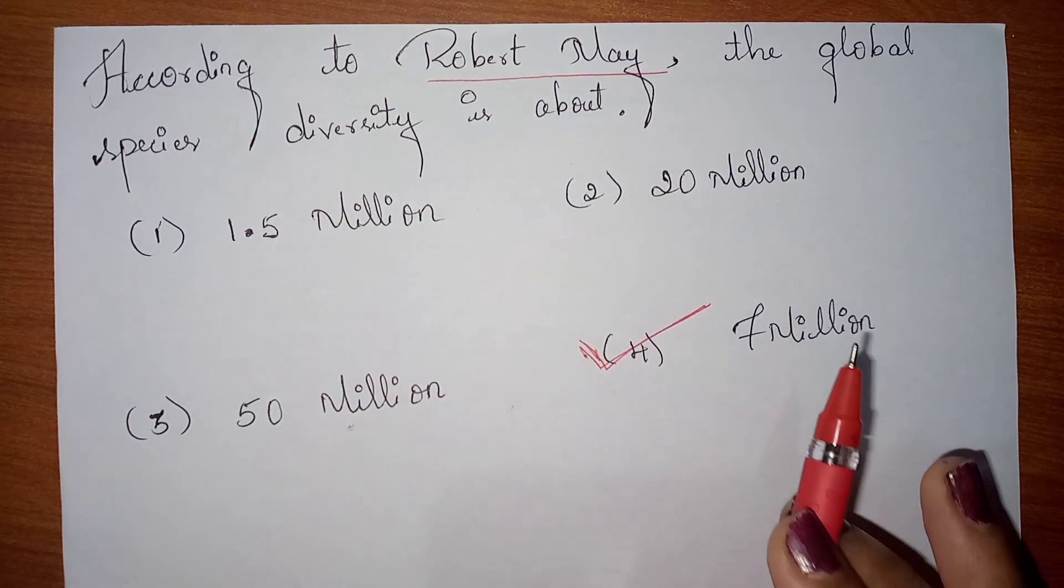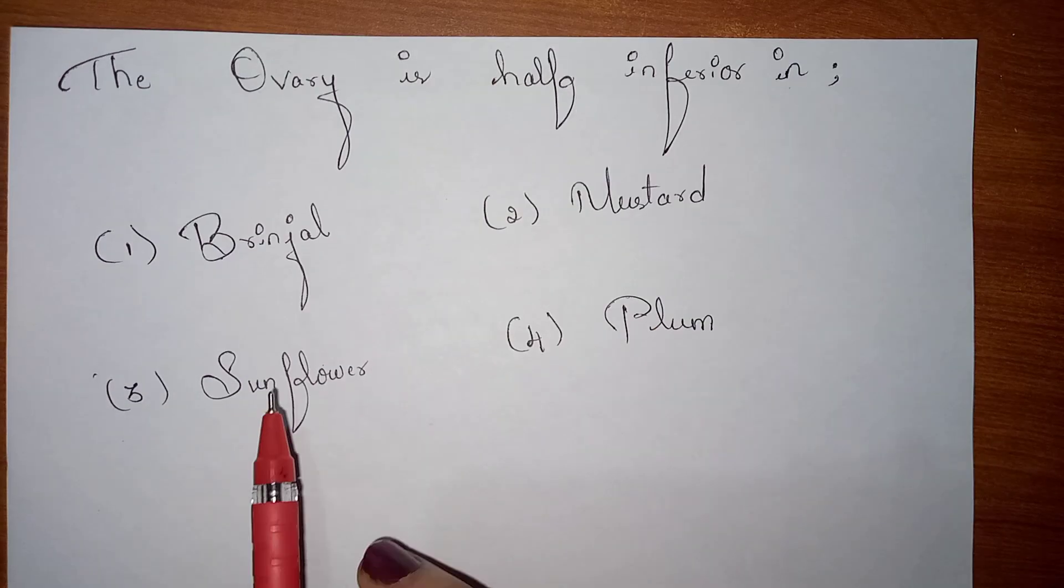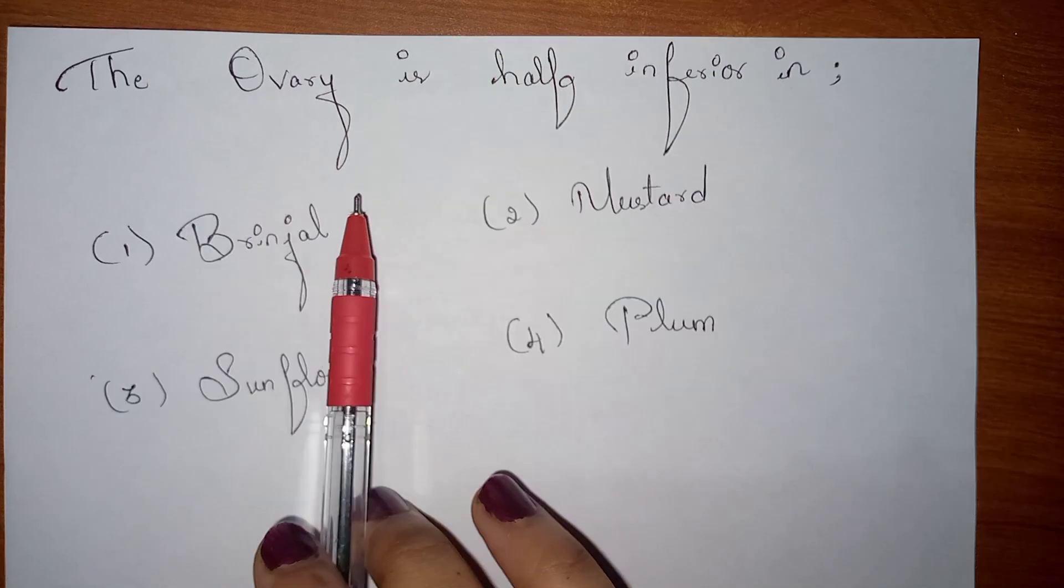So the answer is here 7 million. According to Robert May, there are 7 million diversity of species or variety of species in this earth.